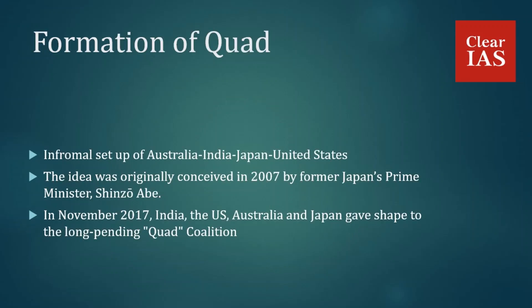The Quad, or Quadrilateral Security Dialogue, is an informal setup of Australia, India, Japan, and the United States. This grouping aims to strengthen defense and security cooperation among these four countries. The idea was originally conceived in 2007 by former Japanese Prime Minister Shinzo Abe, and it was proposed to check China's growing influence and assertiveness in the Indo-Pacific region.